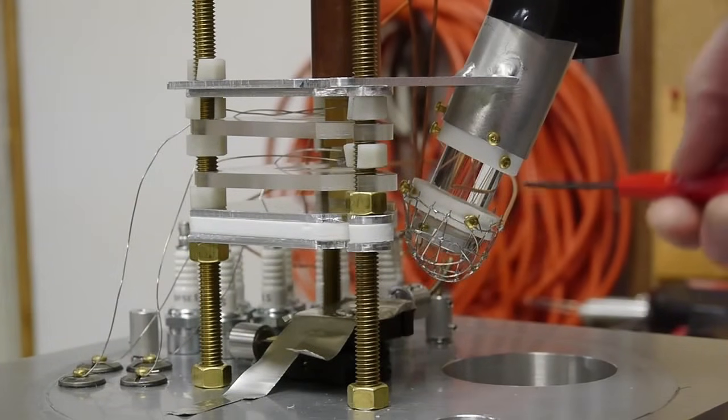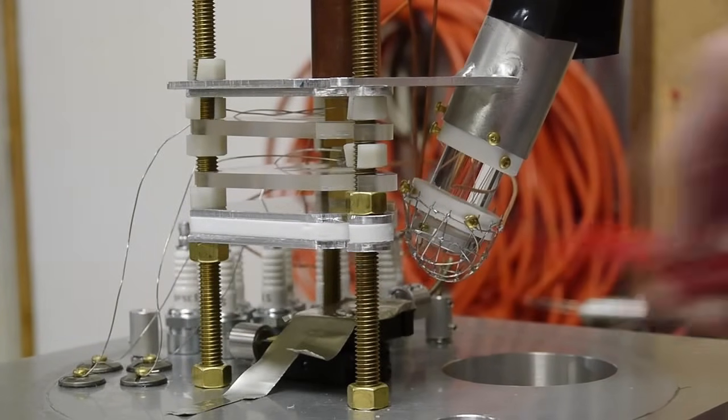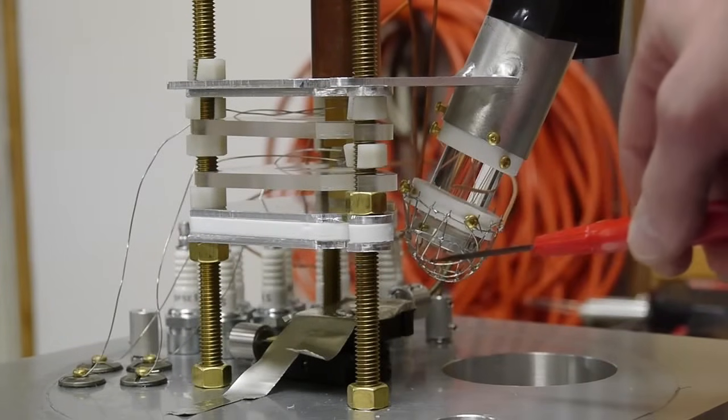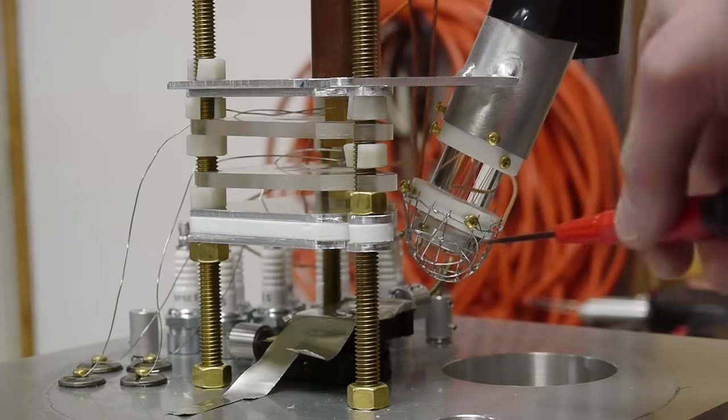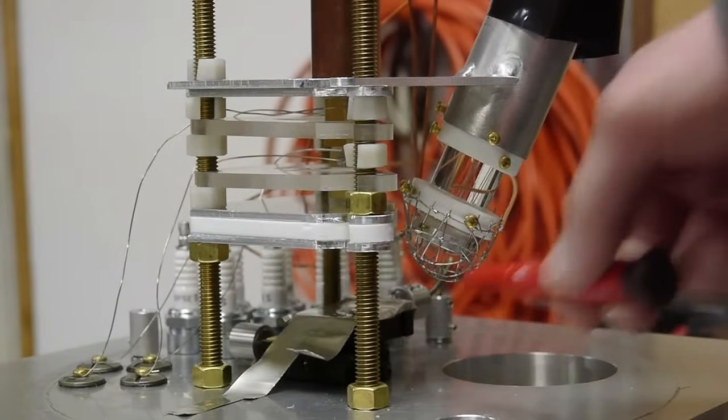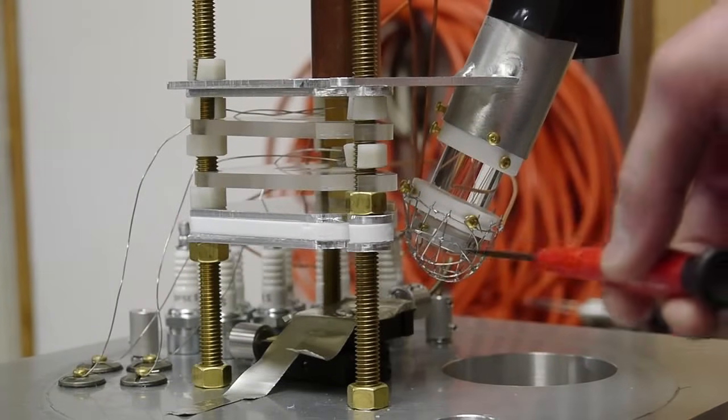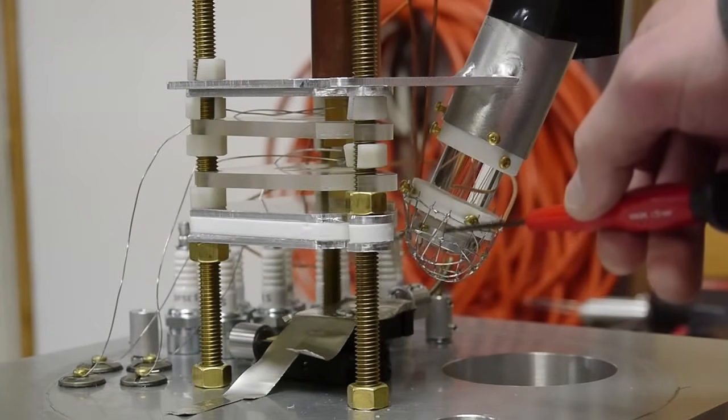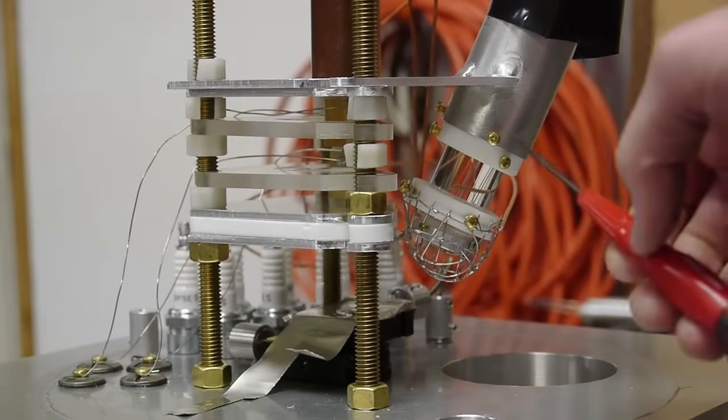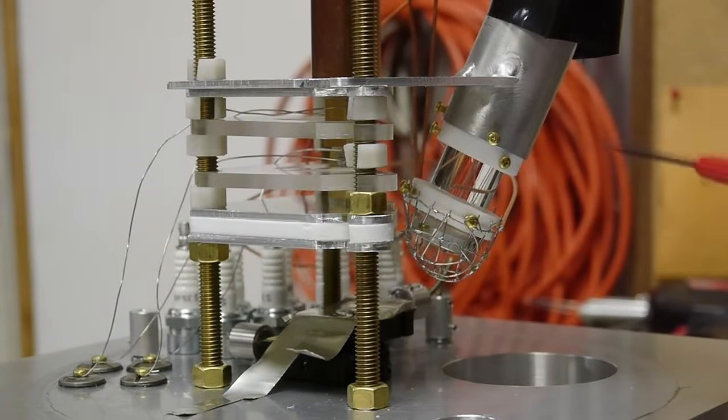This particular one is called an Everhart-Thornley detector. The way it works is by attracting those secondary electrons that are liberated from the surface of the object over to here, and it does that by putting a voltage on this cage. Inside here there is a phosphor, just like the coating on a television screen or an oscilloscope. When those electrons are attracted over here, they're accelerated and slammed into that phosphor creating a little flash of light. The flash of light is conducted through an acrylic light guide and then up into here where there's a photomultiplier tube, which is really just a fancy device that can sense very low light levels. We end up with a flickering light that's being sensed by the photomultiplier inside here. The reason I'm using this plastic bag is just to keep stray light out.